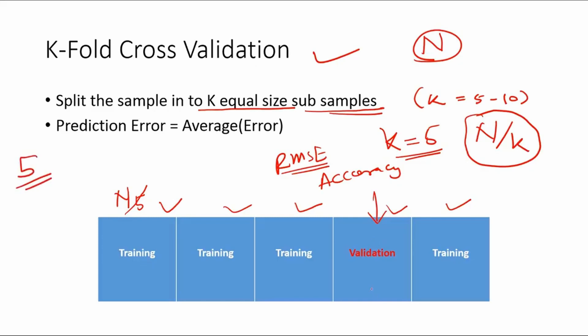Validation sample can be any one of these 5 samples. So now you build a model by including training samples 1, 2, 3, and 4th one, and then you validate it on this particular one, the last sample. And you keep on changing that. So there will be 5 iterations.